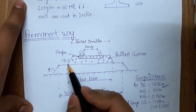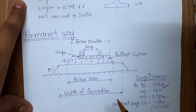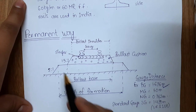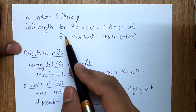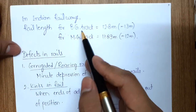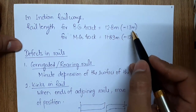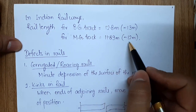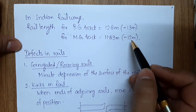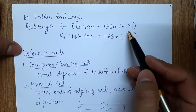The slope of the ballast is 1.5:1 and the slope of the subgrade is 2:1. The width of the ballast area is called the width of formation. In Indian Railways, the rail length used for broad gauge track is 12.8 m (approximately 13 m), and for meter gauge track it is 11.89 m (approximately 12 m).